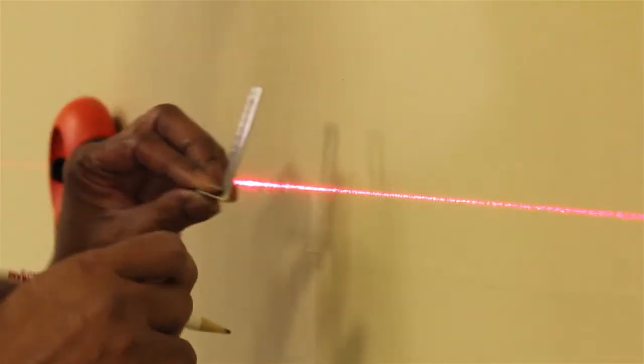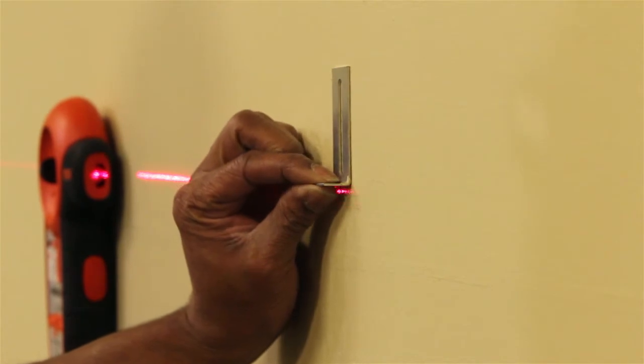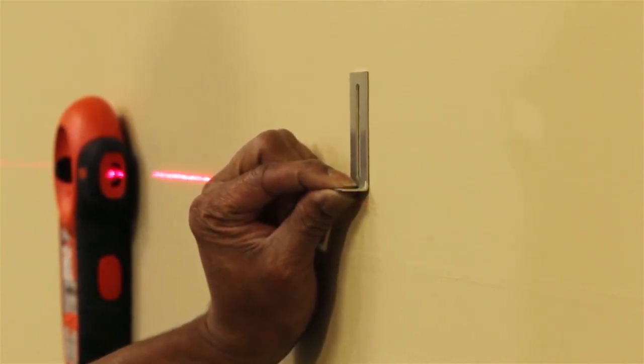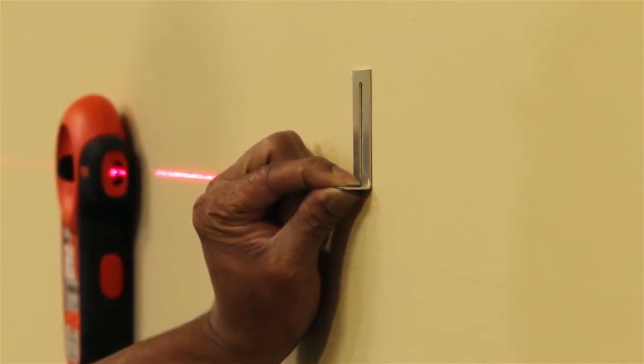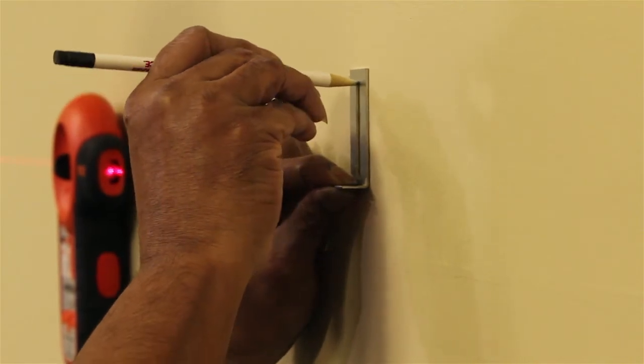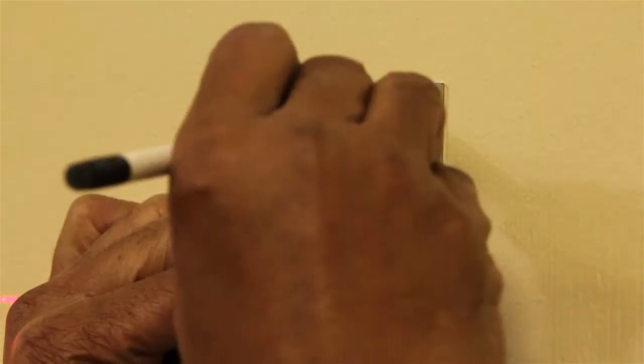Hold the mounting clip with a bend on the mark previously made with the longer tab up or in the vertical position. Make another mark at the top of the slot in the clip.